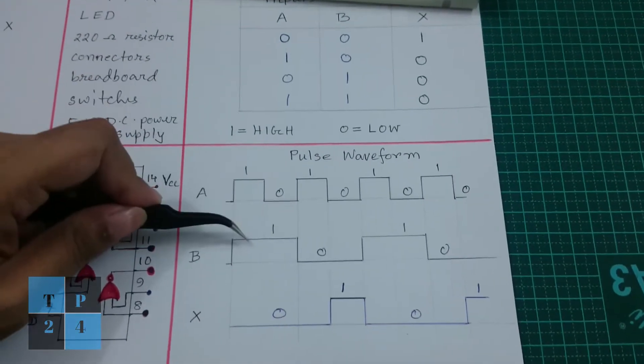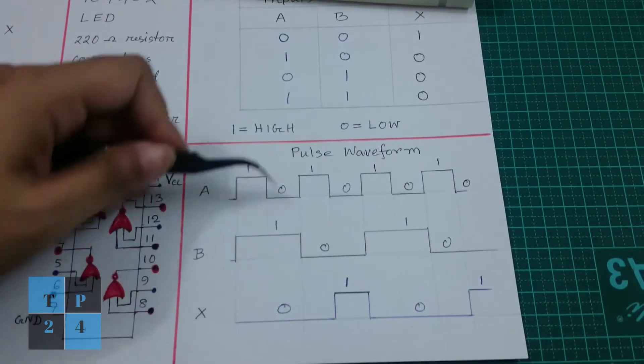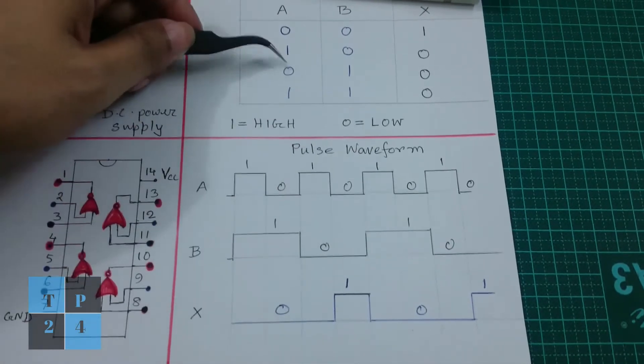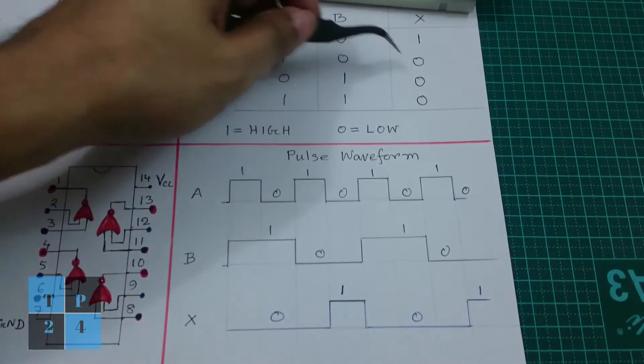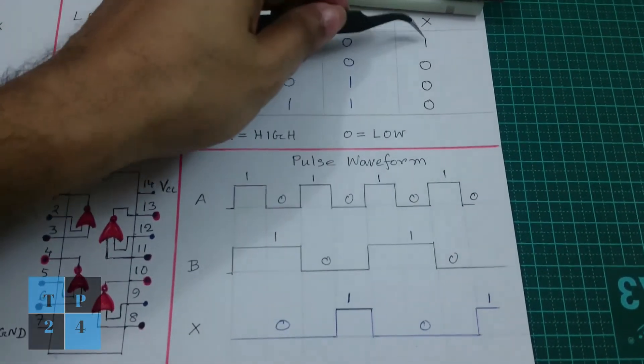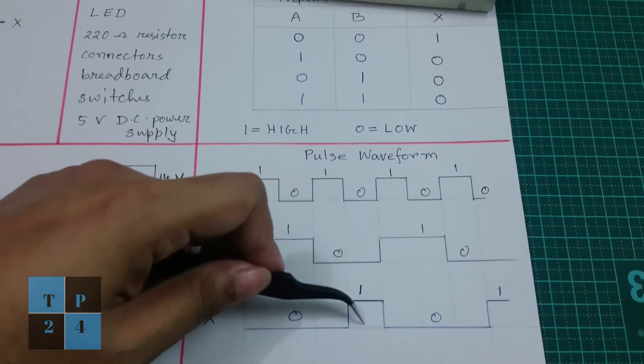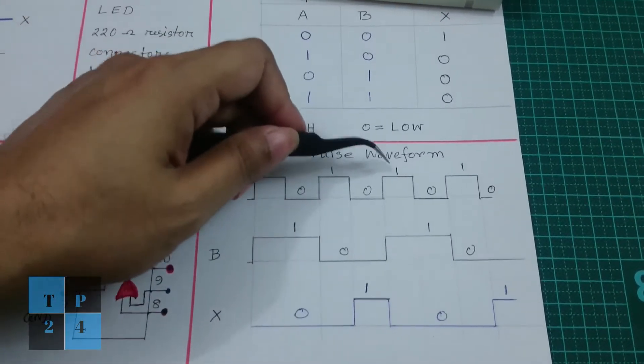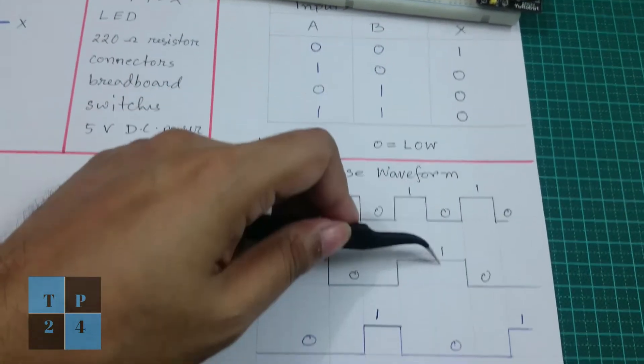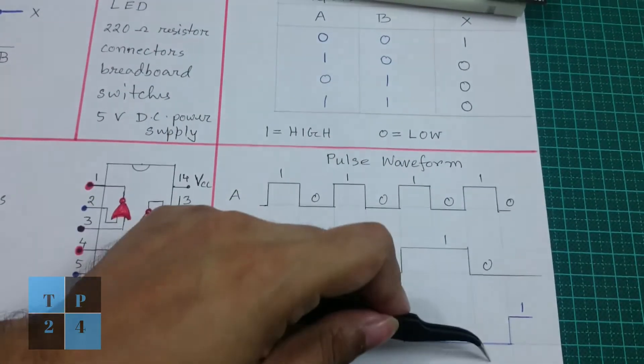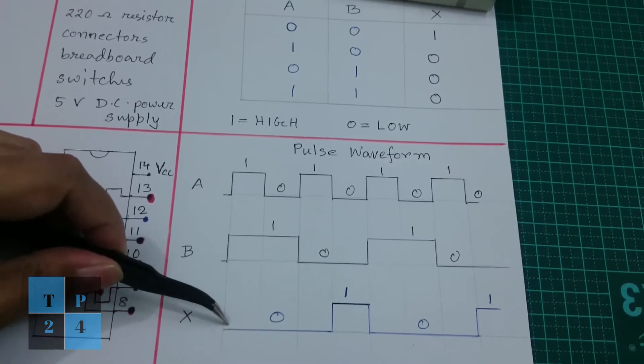Here 1,1 is 0, so 1,1 is 0. And 0,1 is 0. And 1,0 is again 0. But 0,0 is high, so this portion is high. And again 1,1 is 0. This is the output of NOR gate in pulse waveform.